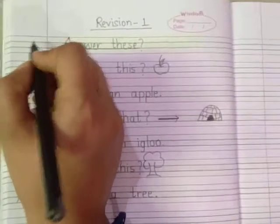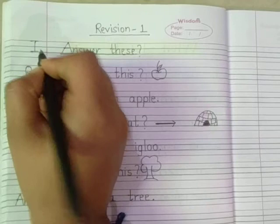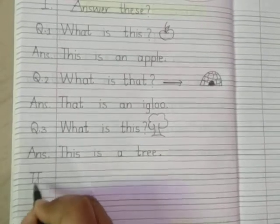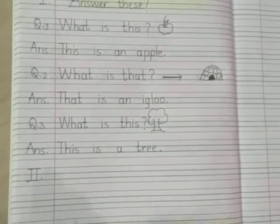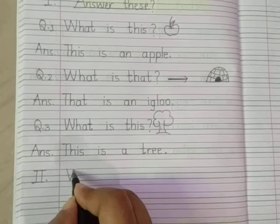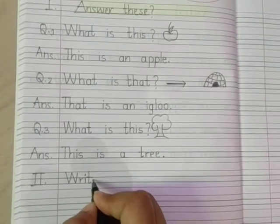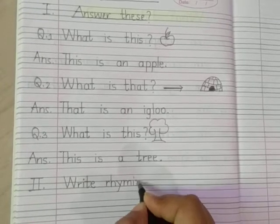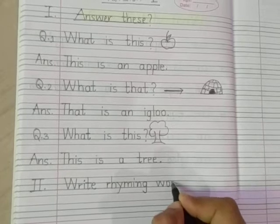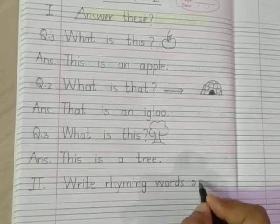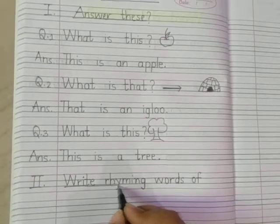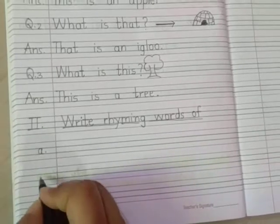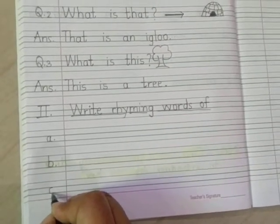So here we have completed question and answers for Revision 1. Now we are moving towards question number 2. In question number 2, what we have to write? We have to write the rhyming words. That means you are going to get some words for which you have to write the rhyming words. The questions are A, B, and C.